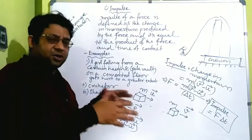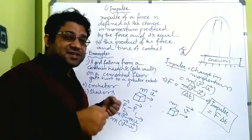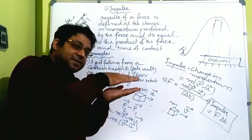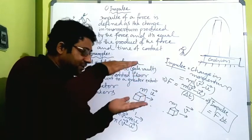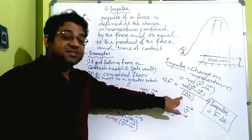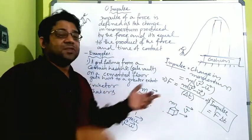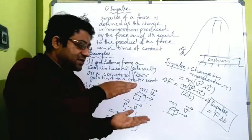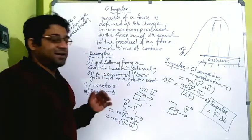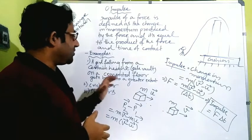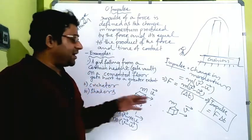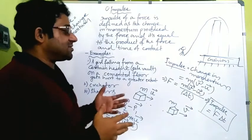Similarly, the shock absorbers of a car or any automobile use springs to absorb sudden jerks. Whenever there is a sudden jerk, the springs compress. While the springs are being compressed, the change in momentum takes place over an increased time — it is not a sudden change. So the time increases, the force decreases, and the rider doesn't experience that much force and doesn't get hurt. These are all examples of sudden impacts where force experienced is large, and we take measures to minimize that force.